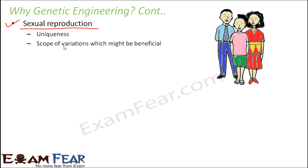When we say variations, consider a simple example of a family — a father, mother, and daughter. This daughter has got some traits from her mother and some from her father. But there might be certain traits which are new to the daughter, not present in either parent. That new trait may turn out to be beneficial. So variation resulted in something beneficial, and nature supports good variations — that particular variation might get transferred to the next progeny.